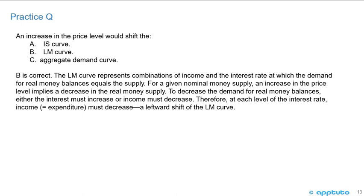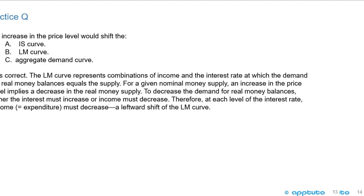To decrease the demand for real money balances, either the interest rate must increase or income must decrease. Therefore, at each level of the interest rate, income must decrease — which is a leftward shift of the LM curve.